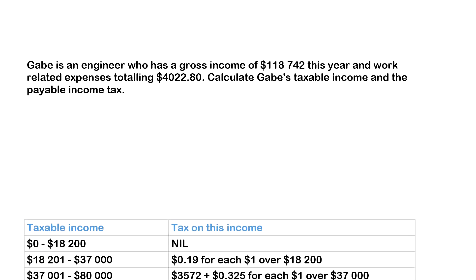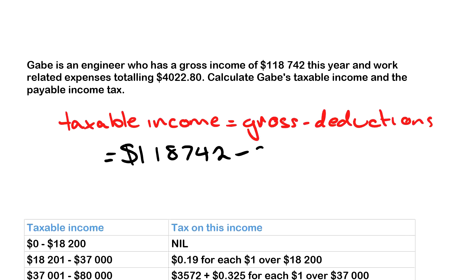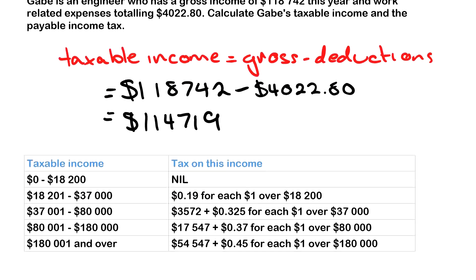Gabe is an engineer who has a gross income of $118,742 this year and he has work-related expenses totaling $4,022.80. We need to calculate his taxable income first and then his payable income tax. Taxable income is gross minus deductions, so in Gabe's case it's $118,742 minus $4,022.80, which comes out as $114,719.